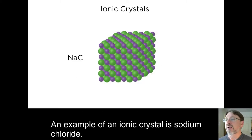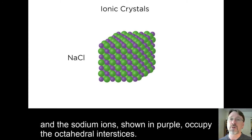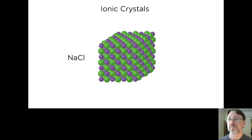An example of an ionic crystal is sodium chloride. Here we can see that the chloride ions, green in this picture, form a face-centered cubic lattice, and the sodium ions, shown in purple, occupy the octahedral interstices. Thank you.